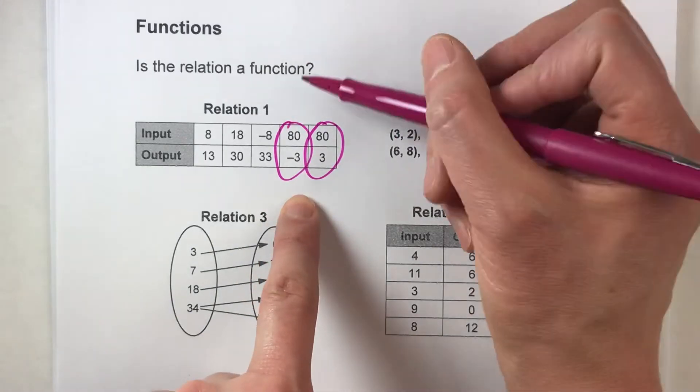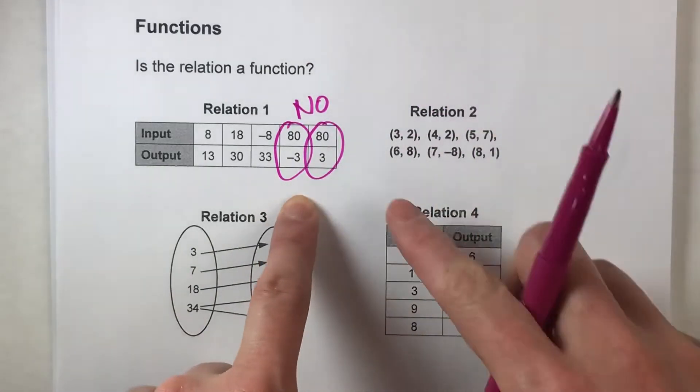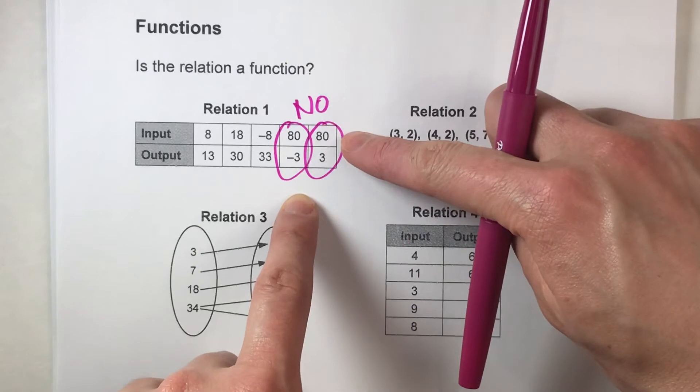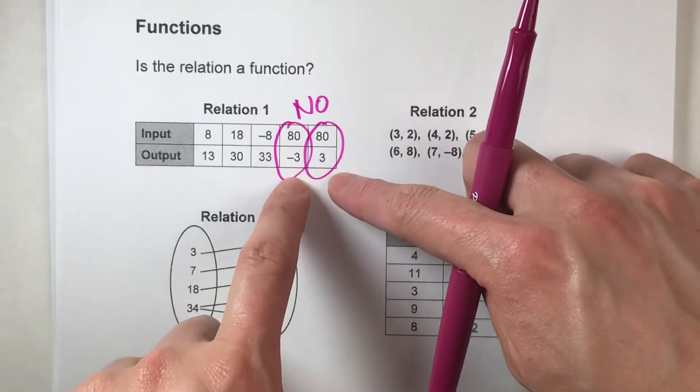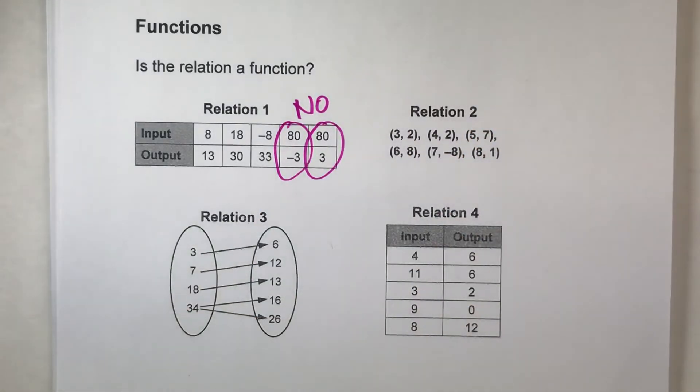Now that makes this not a function. You can't input the same number into a relation and get two different outputs. That makes it not a function.